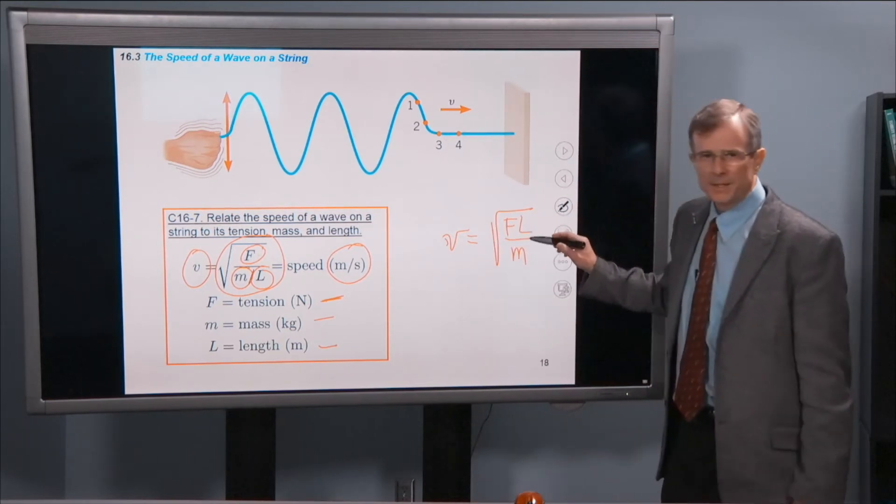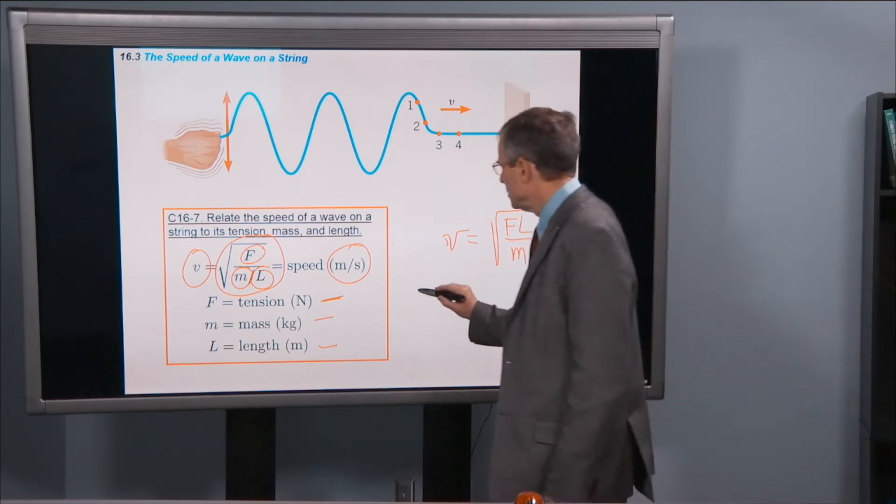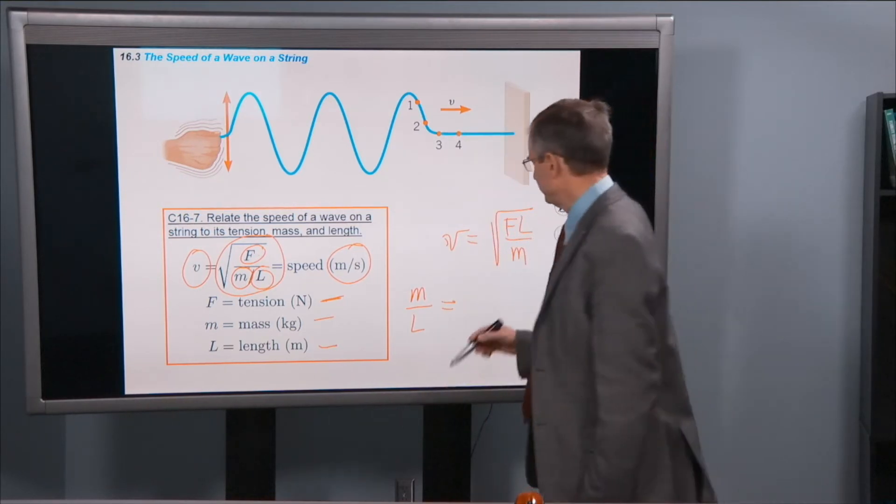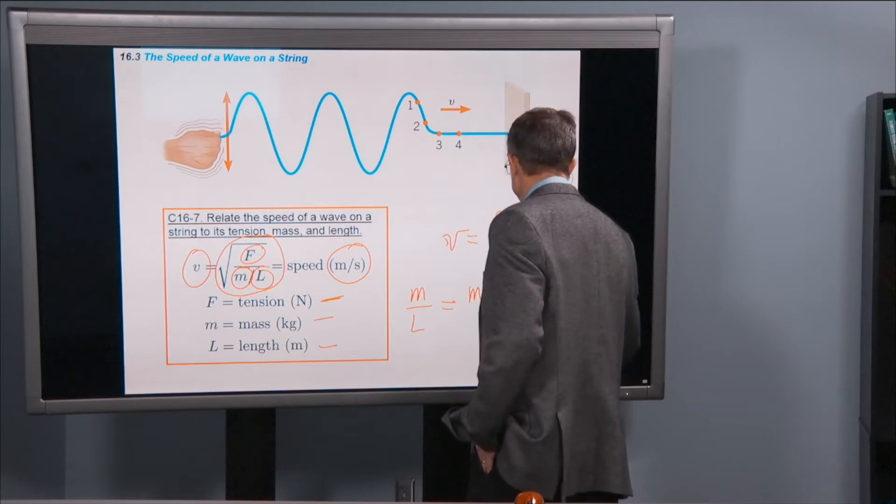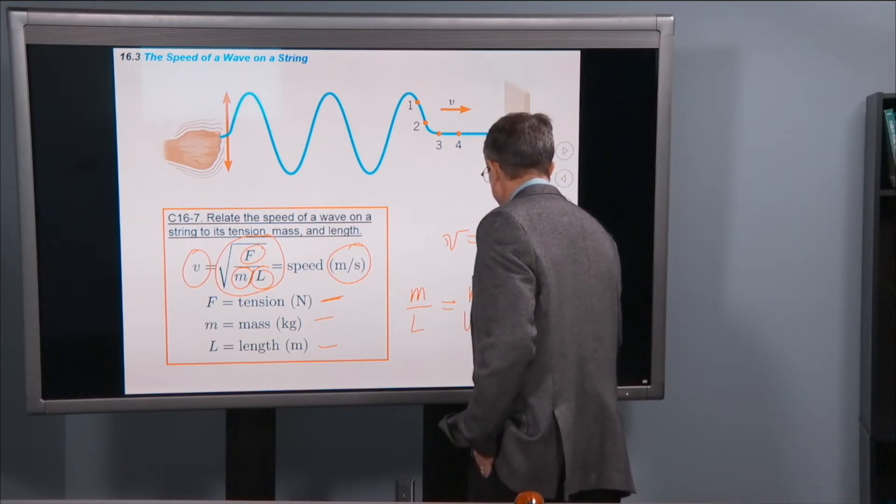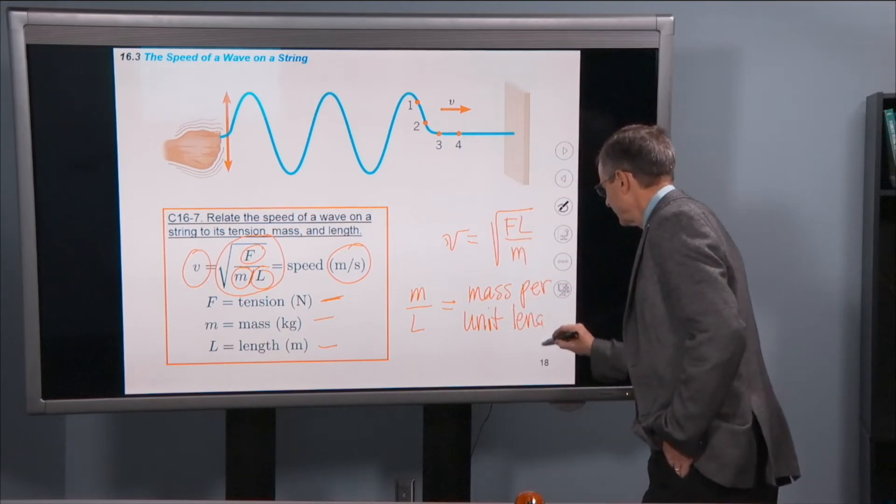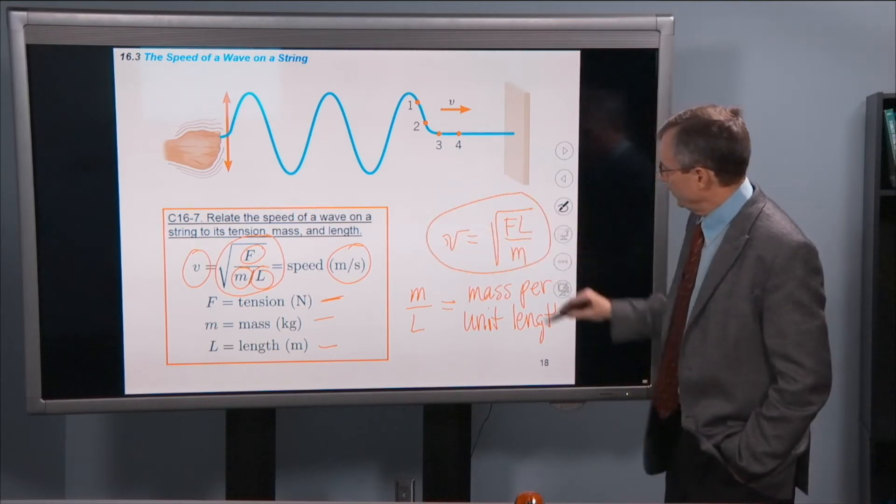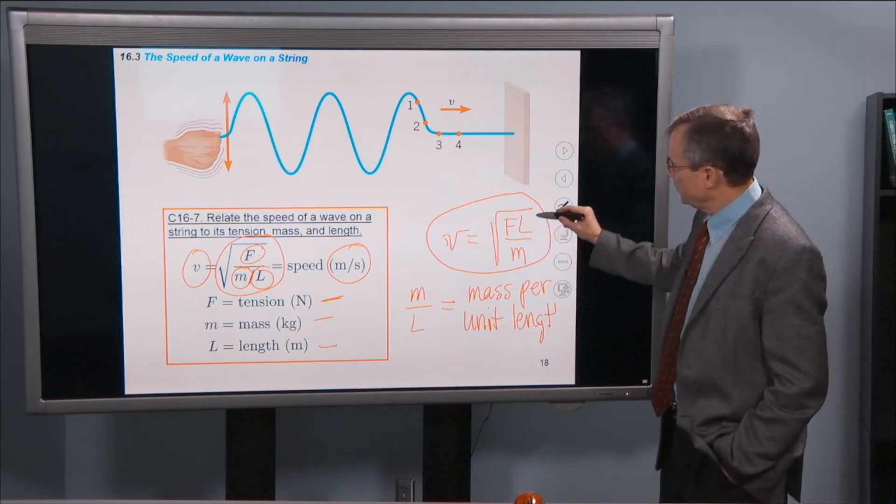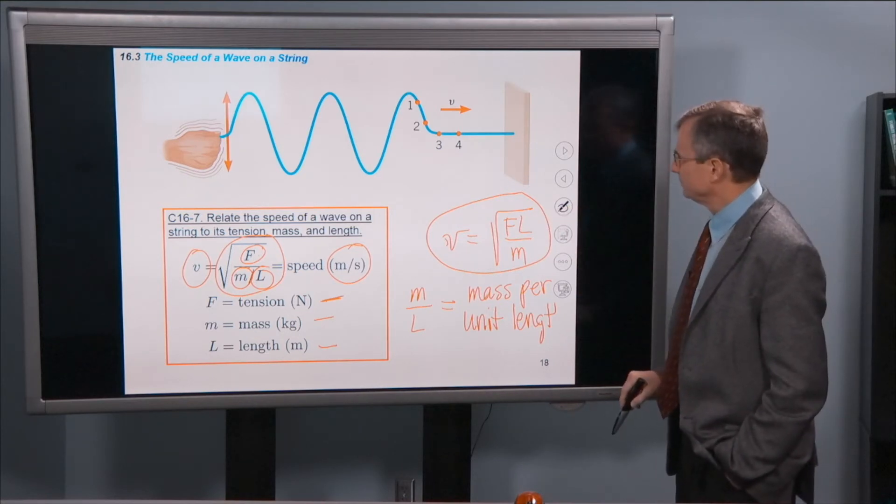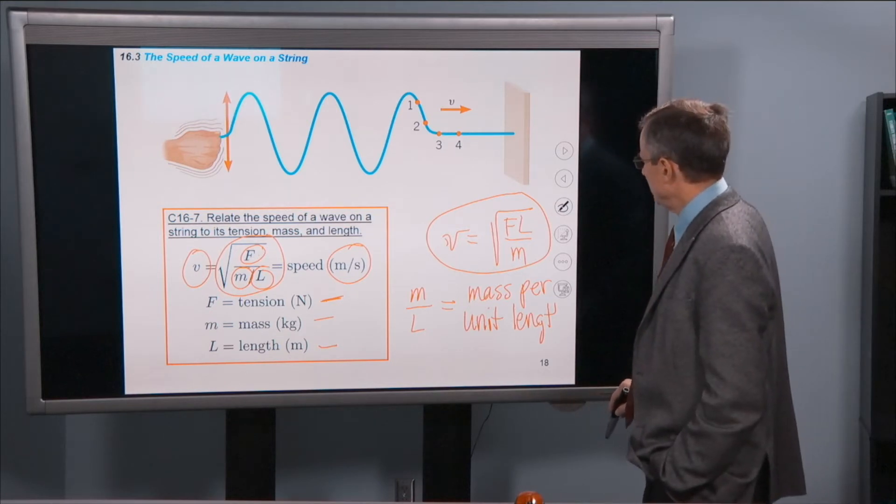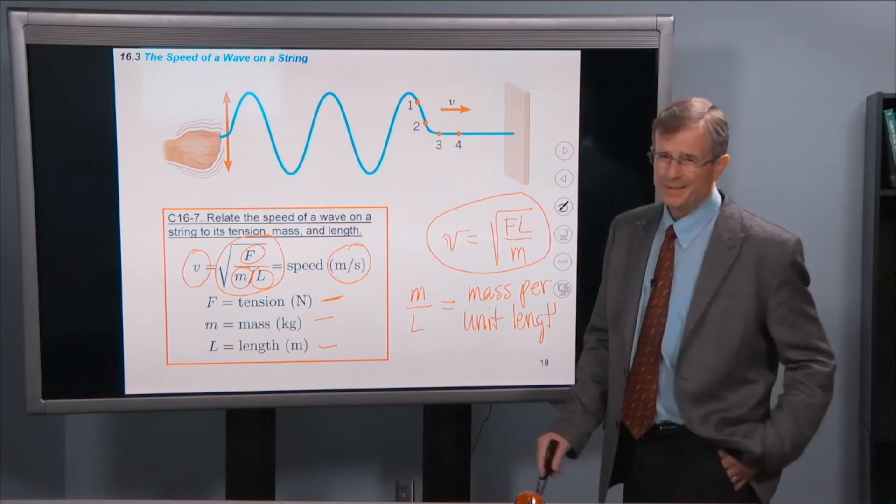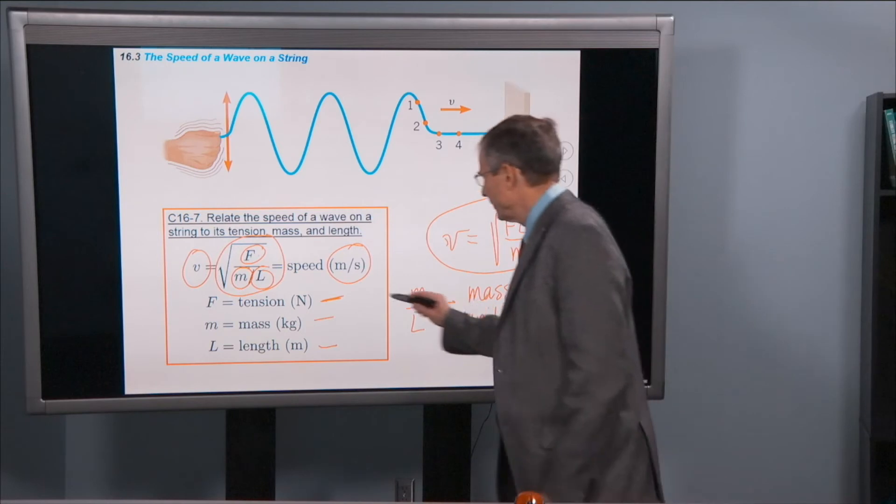So basically I could have written this as V is the square root of FL over M. The only reason I didn't write it in this simple way is in a lot of problems, it's useful to think of this quantity being the mass per unit length. But you can think about it this way if you rewrite the equation as we just did. If you increase the length, then you're going to increase the speed. And it's really the mass per unit length that matters, honestly. So this is probably the best way to think about it here.